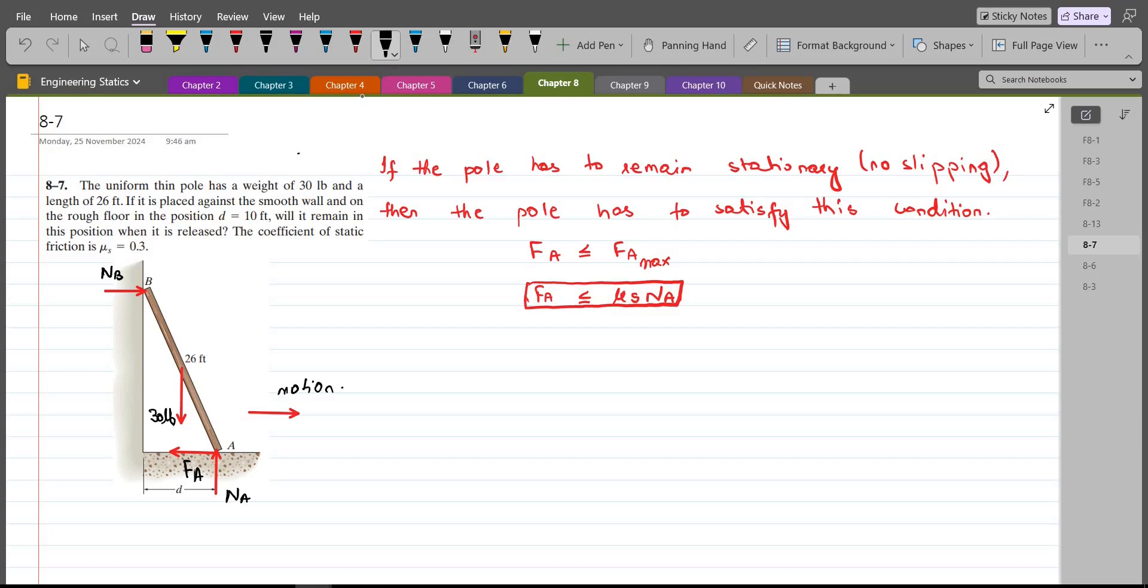Now, we can apply our equilibrium equations. So, our first equation for Na would be summation of forces in y direction equals to 0. I am considering up direction as positive. So, we have Na minus 30 lb equals to 0. From here, Na comes out to be 30 lb.